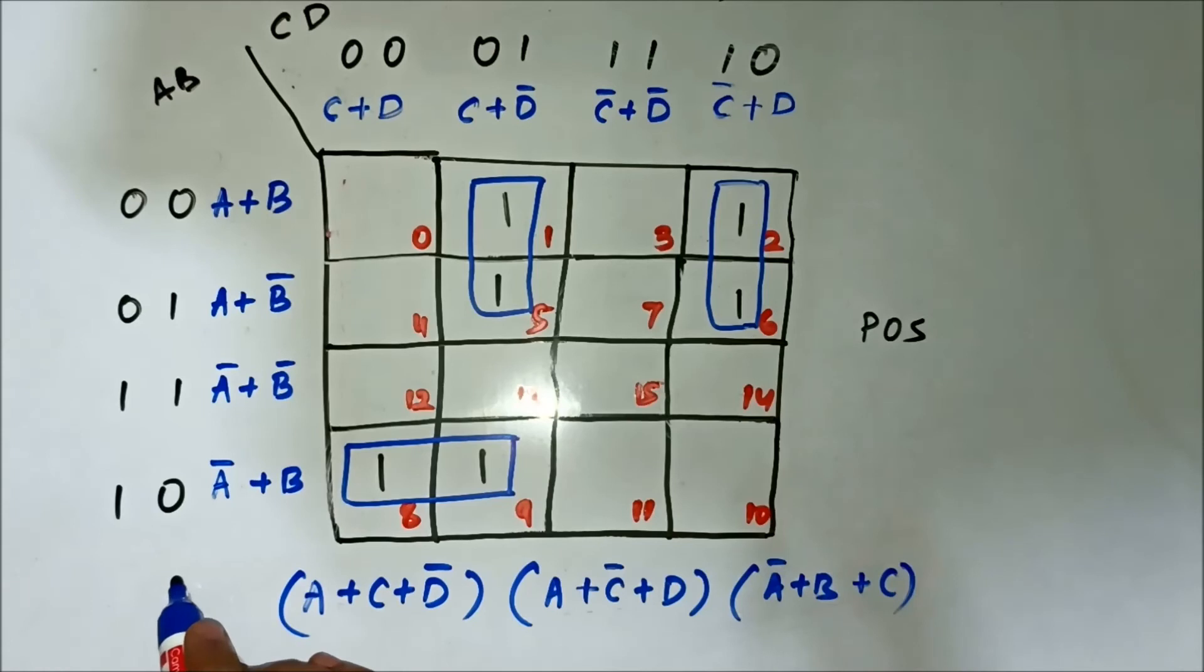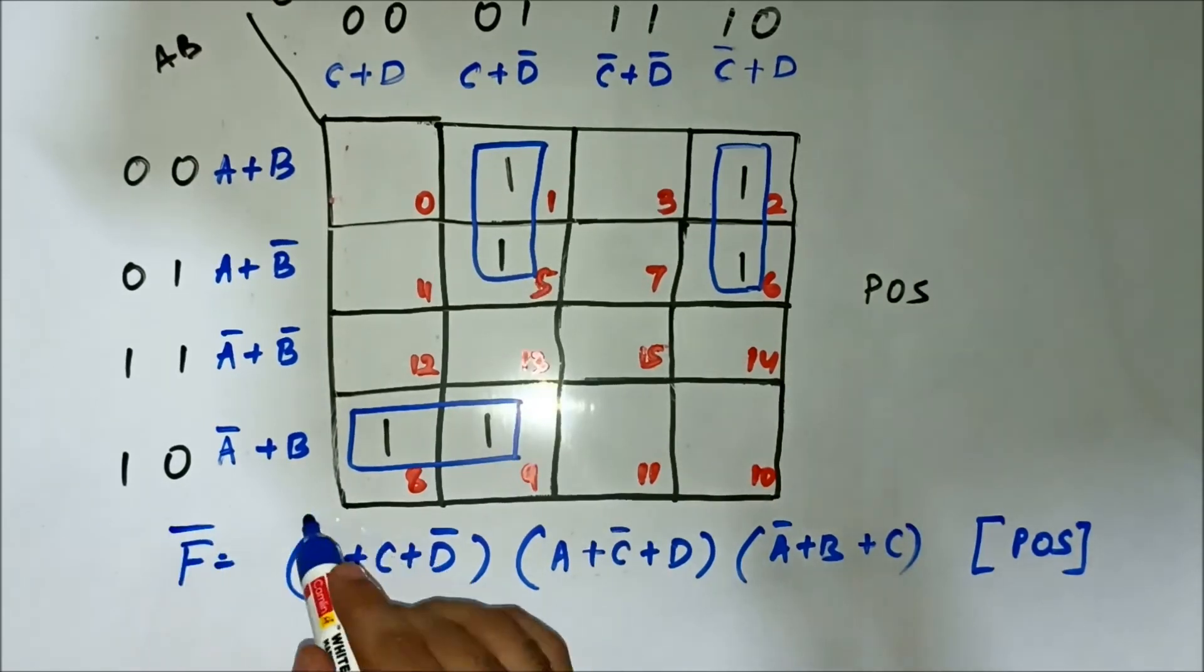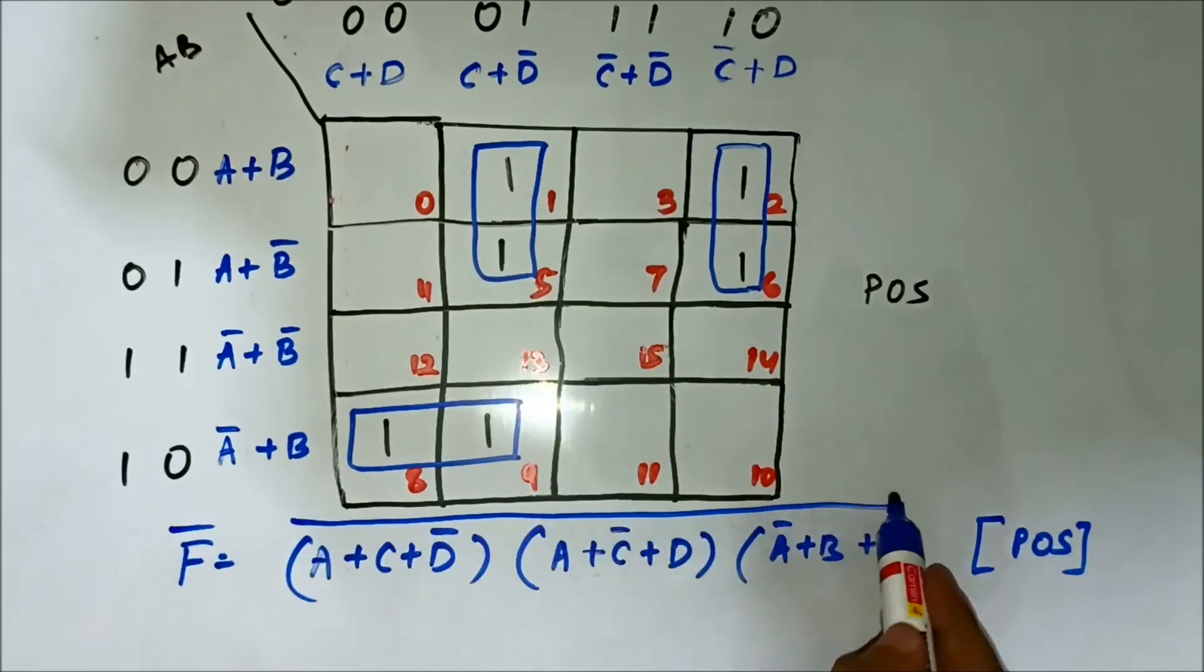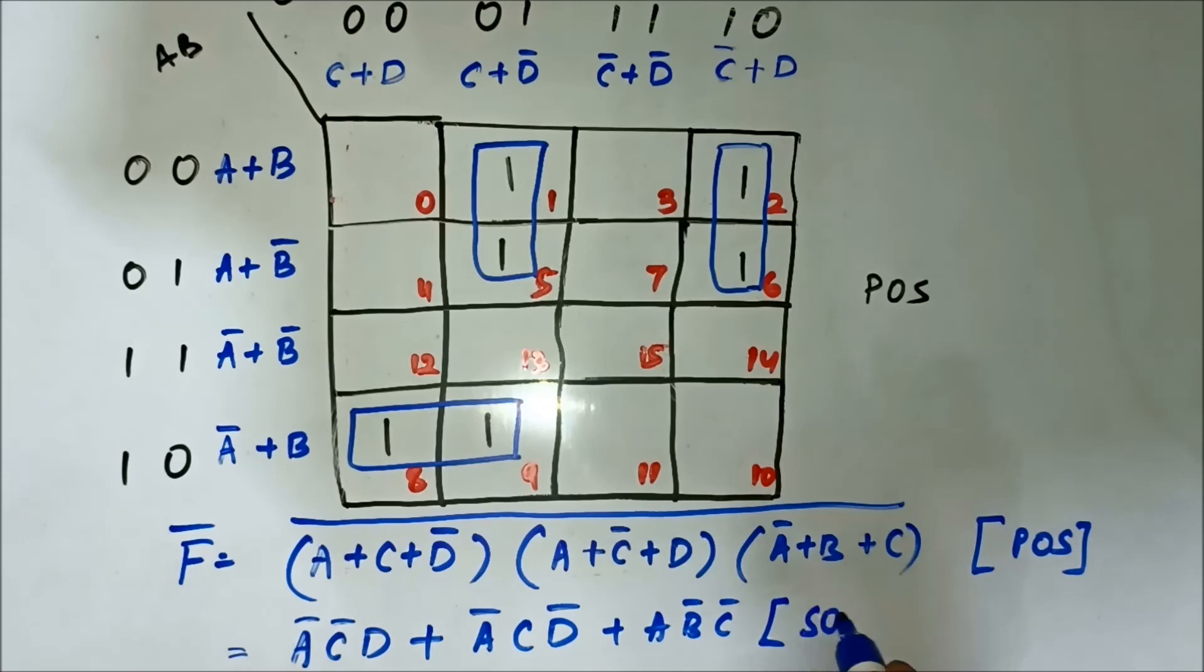But, this is POS, product of sum format. We need SOP. So we'll complement this. So when we whole complement it, apply De Morgan's theorem, we get A bar C bar D, A bar C D bar, A B bar C bar. And this is the SOP format.